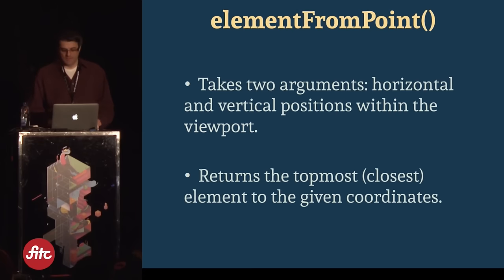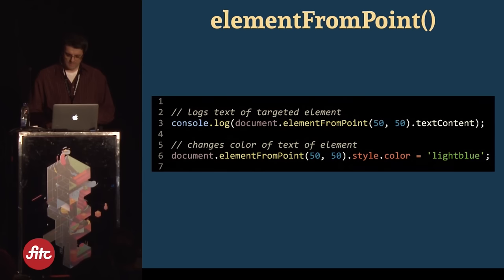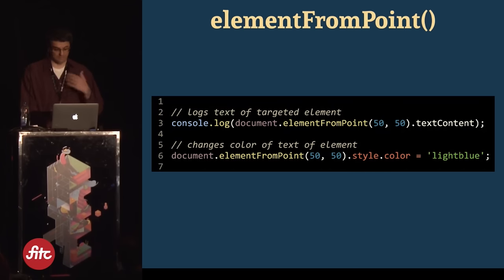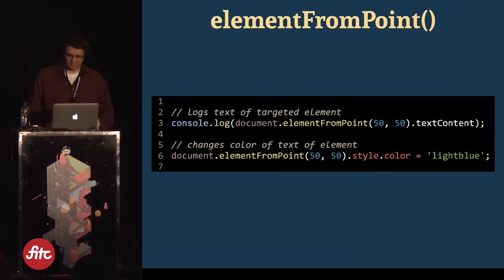Here's a method called elementFromPoint. It takes two arguments — horizontal and vertical positions within the viewport — and returns the topmost element closest to the given coordinates. Passing in coordinates like 50, 50 gives you the element at that point and you can get its text content or any other property. It could come in handy when things are changing or moving around on the page and you need to identify what's at a particular position.